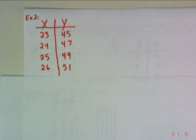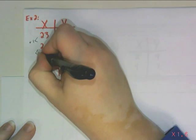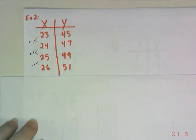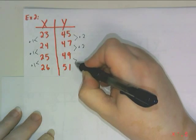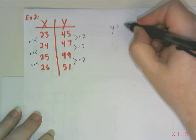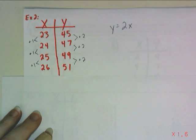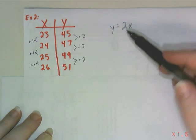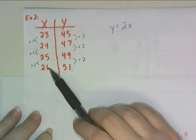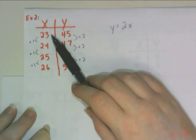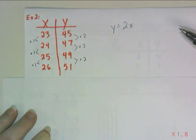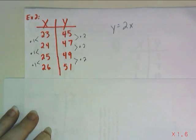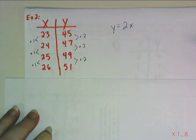In my next example, x values are still increasing by 1, so the rate of change in y is an increase of 2. My equation starts with y equals 2x. But now I'm not sure what my y-intercept is — my table does not include x equals 0. The numbers aren't close enough to 0 to easily back up the table, and I really don't want to go backwards 22 steps. So instead we're going to do a little bit of math.